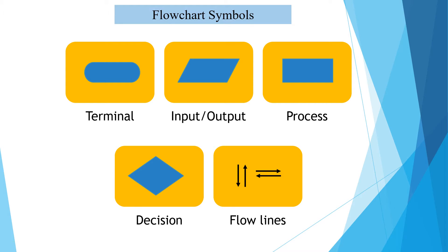Now we see the symbols which we use for the flowchart. The first symbol is called a terminal. It is a rounded rectangle. This symbol, named as terminal, indicates the start and stop of the process — that is, the starting and end of the flowchart is indicated by this symbol.